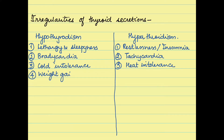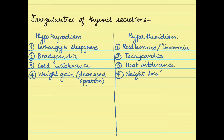In hypothyroidism the person has a decreased appetite but still shows weight gain. In contrast, for hyperthyroidism the person shows weight loss even though they have a high or increased appetite. Some of the disorders related to hypo and hyperthyroidism — in case of hypothyroidism during childhood, if thyroxine level decreases, that results in a condition called cretinism.